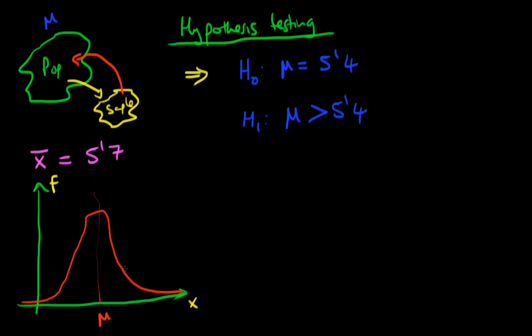How can we use this to test whether the null hypothesis is true? We need to think about how likely it would be that we would reject the null hypothesis given that it was true — that's this tail region in the case of a one-tailed test. Because this is a PDF, integrating from minus infinity to plus infinity adds up to 1. We can think of this fat tail as representing the probability that we would have gotten an average height value in that range, given that the true population mean was actually mu.